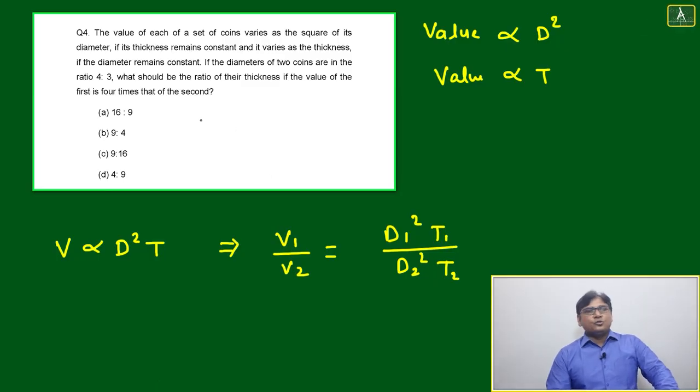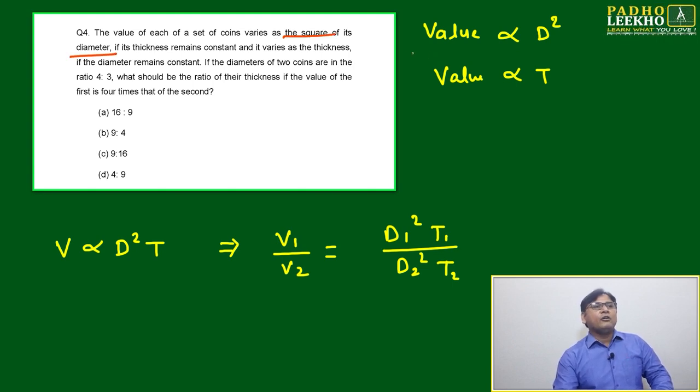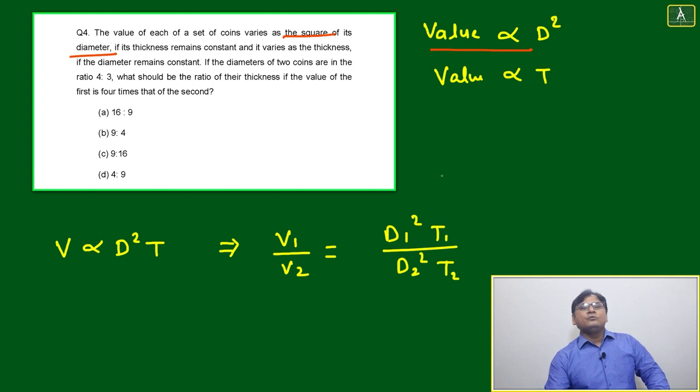Welcome to the next question, question number four. The value of each of a set of coins varies as the square of its diameter. Value is directly proportional to diameter squared.